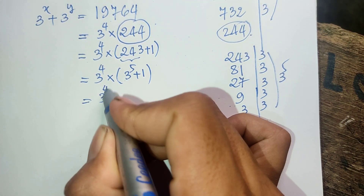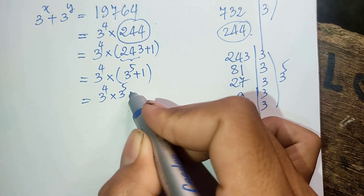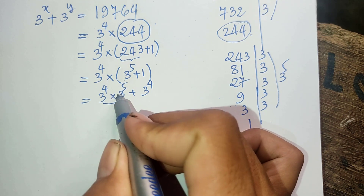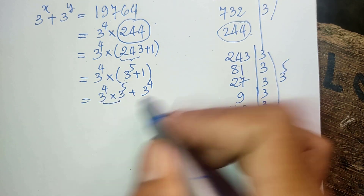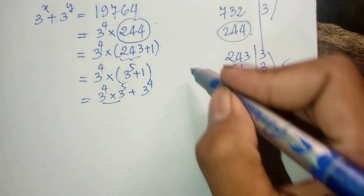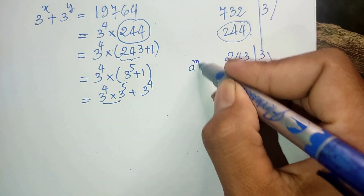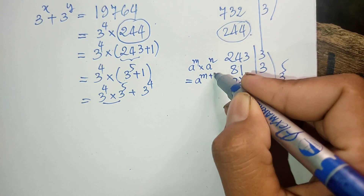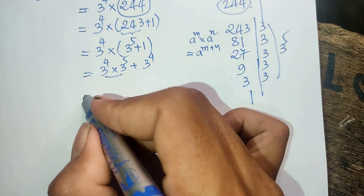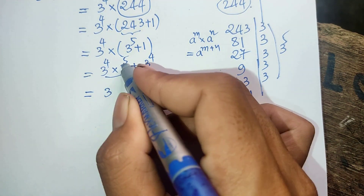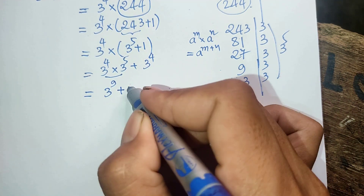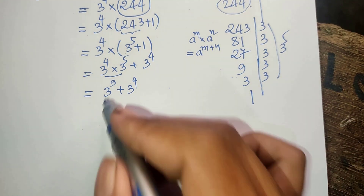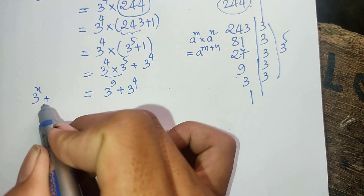Multiplying out, we get 3 to the power 4 times 3 to the power 5 plus 3 to the power 4. These have the same base, so we add the exponents using the rule: s to the power m times s to the power n equals s to the power (m plus n). So this gives us 3 to the power (4 plus 5) equals 3 to the power 9, plus 3 to the power 4.